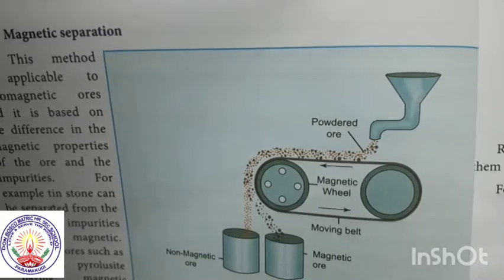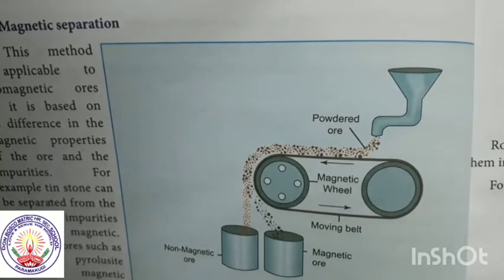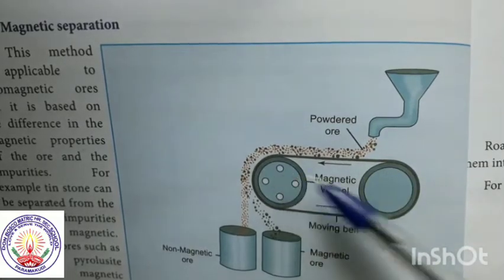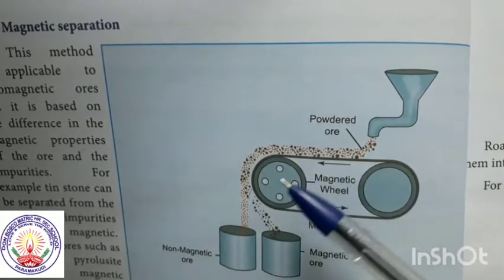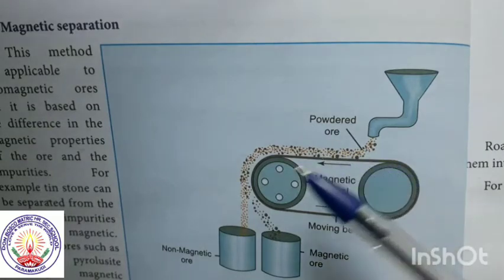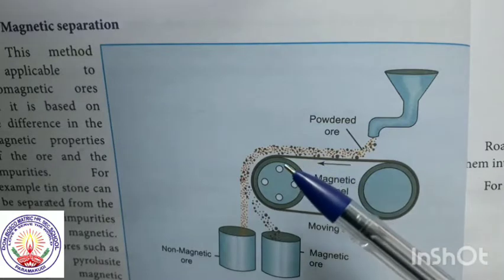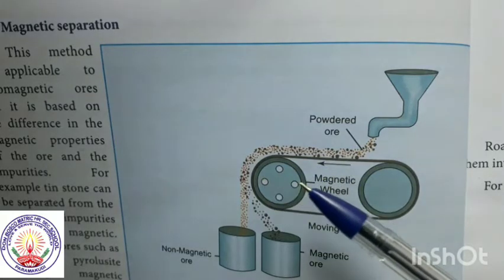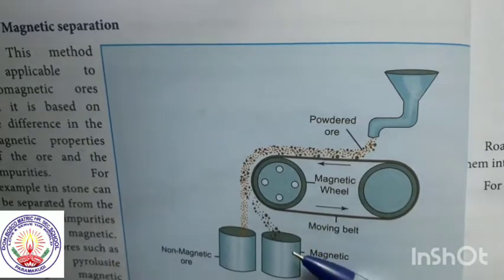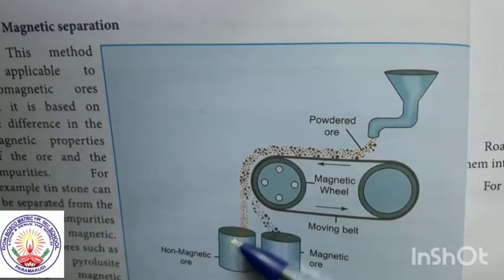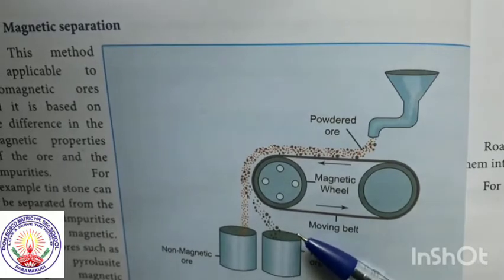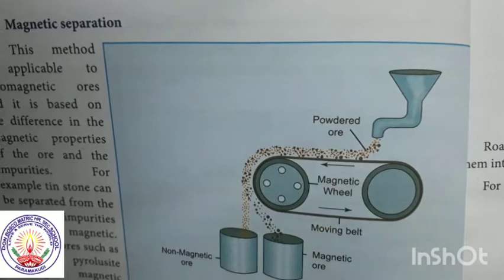Looking at the diagram for magnetic separation: the powdered ore is poured down and we have two magnetic separators connected with a belt. When we pour the ore, the magnetic material attaches to the magnetic separator and falls near it in a large amount, while other impurities fall away. This is how we separate ferromagnetic ores.